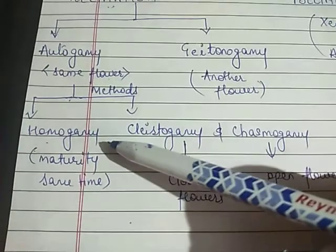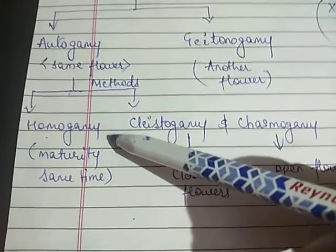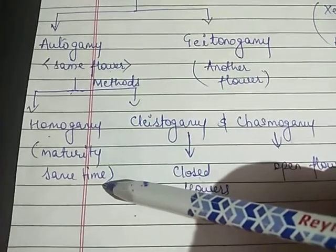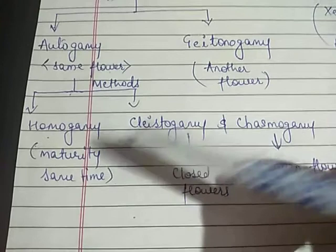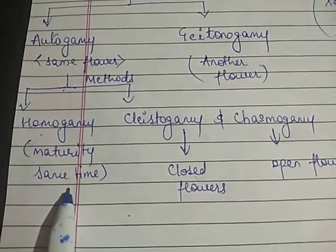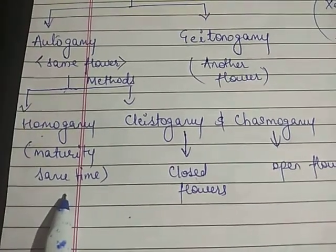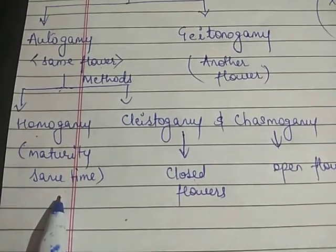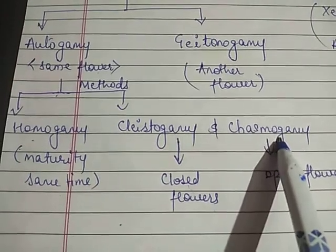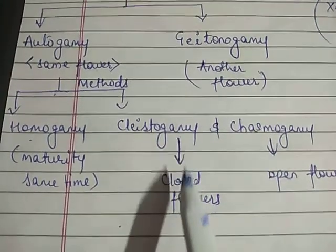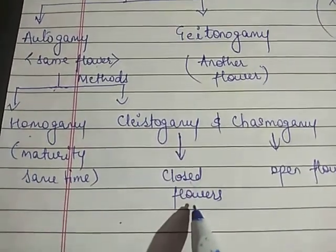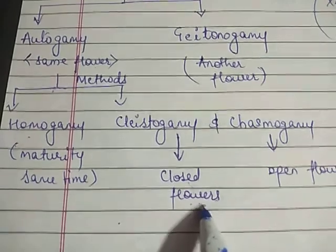Autogamy has various methods of self-pollination. Number one is homogamy — homogamy means the maturation time is the same, i.e., the anther and stigma mature at the same time, ensuring 100% self-pollination. Another method is cleistogamy and chasmogamy.